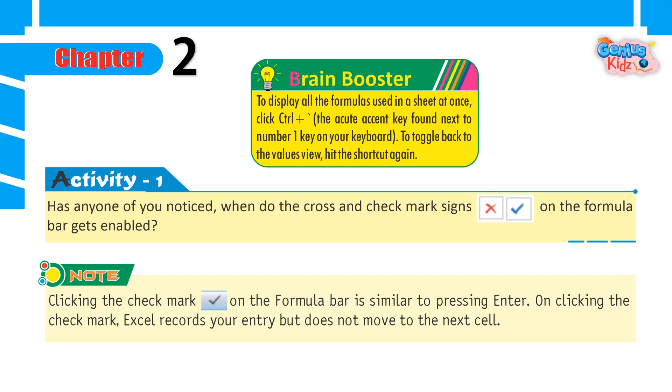Activity 1: Has anyone of you noticed when do the cross and check mark signs on the formula bar gets enabled? Note: clicking the check mark on the formula bar is similar to pressing Enter. On clicking the check mark, Excel records your entry but does not move to the next cell.